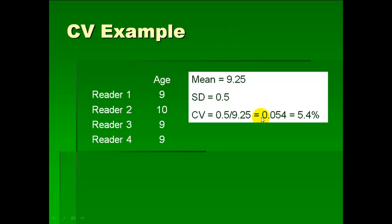So here's our first example. We've got good precision. You see you've got four readers and they're all pretty close. The average age is 9.25, the standard deviation of these numbers is 0.5. And so the coefficient of variation is the standard deviation divided by the mean and converted to a percent, so it's 5.4%.